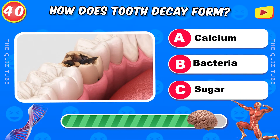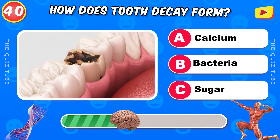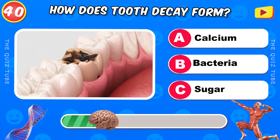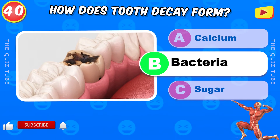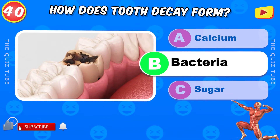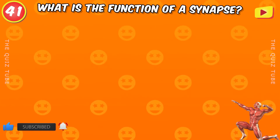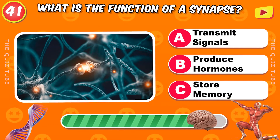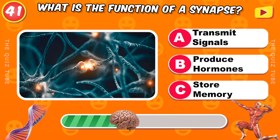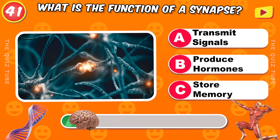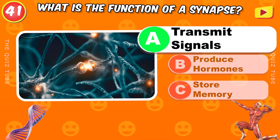How does tooth decay form? Because of bacteria. What is the function of a synapse? To transmit signals.